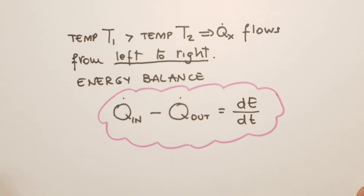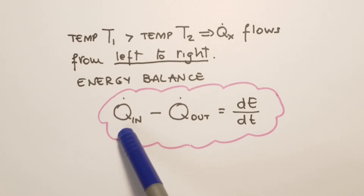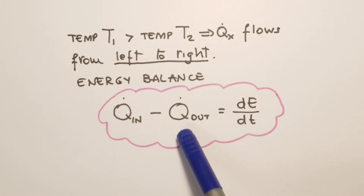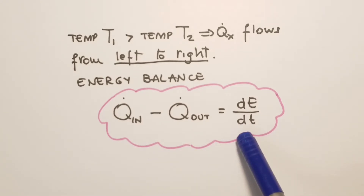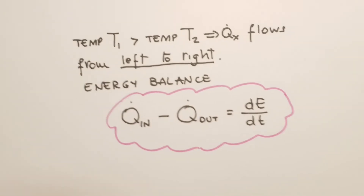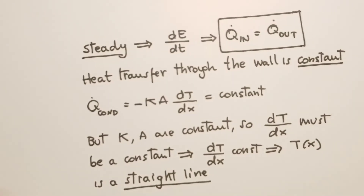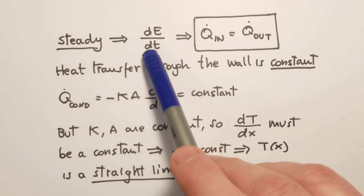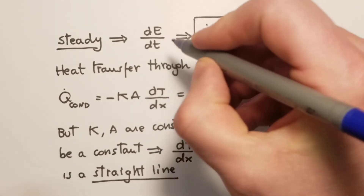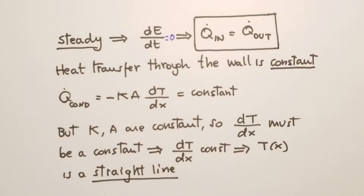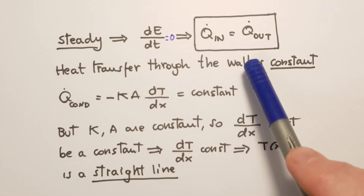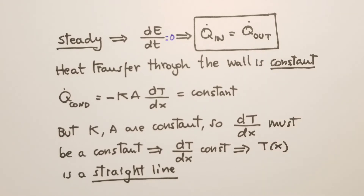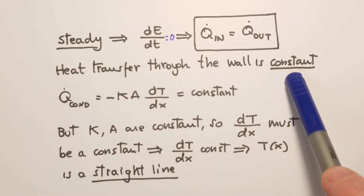We can define an energy balance — conservation of energy. The heat that flows inside the wall minus the heat that flows outside the wall must equal the change of internal energy of the wall with respect to time. Since we are considering steady cases, there is no change over time, so the change of internal energy is zero. Therefore, heat transfer inside the system must equal heat transfer flowing out, meaning heat transfer through the wall is constant at any location x.